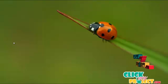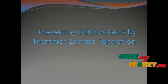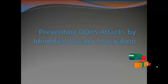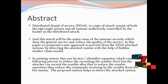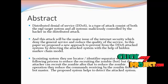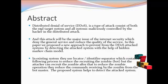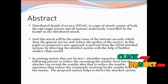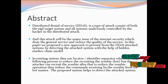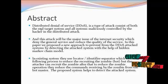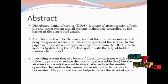Welcome to clickmyproject.com. The project title is 'Preventing DDoS Attacks by Identifier and Locator Separation.' The main environment proposed is Distributed Denial of Service. This type of attack consists of both a target system and all systems maliciously controlled by the hacker, also called a botnet. In the existing system, a locator and identifier separator is used mainly to prevent attacks, but in the proposed system we use it to detect the attacked system.